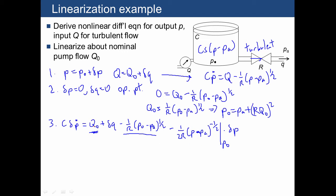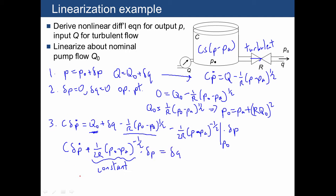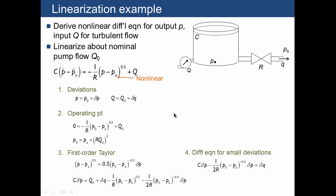After dropping the operating point terms, the deviation equation becomes C times δṖ plus (1)/(2R) times (P₀ minus PA)^(−1/2) times δP equals δQ. This is a linear constant-coefficient differential equation in terms of δP and δQ around the operating point described by P₀ and Q₀. Here the same equations are typed out more legibly, confirming this term is a constant, giving us the linear constant-coefficient ODE.